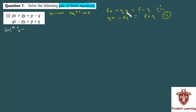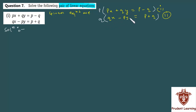So, to equate the coefficients of y, we will multiply the first equation by P and the second equation by Q. In the two resulting equations, the coefficient of y will be PQ, and since the signs are opposite, y will eliminate.